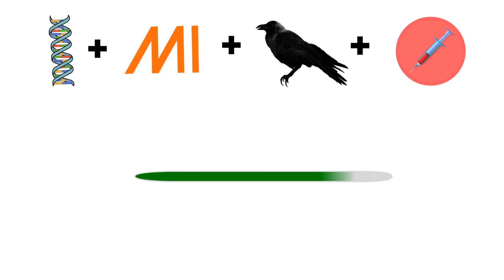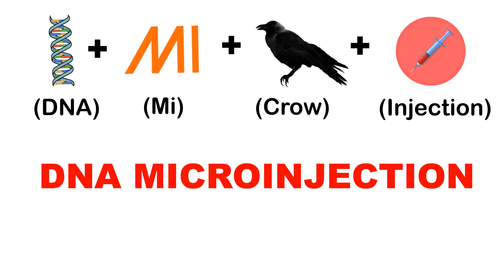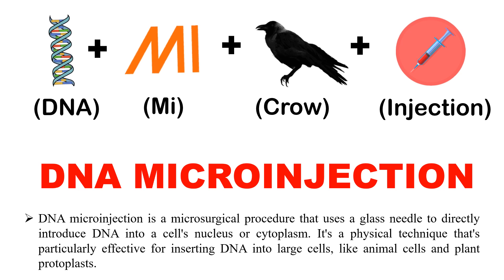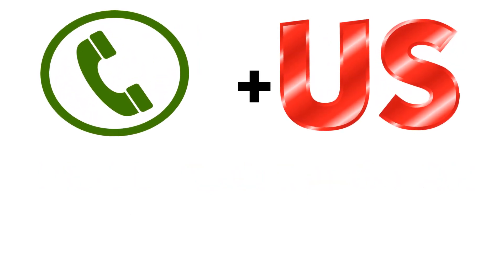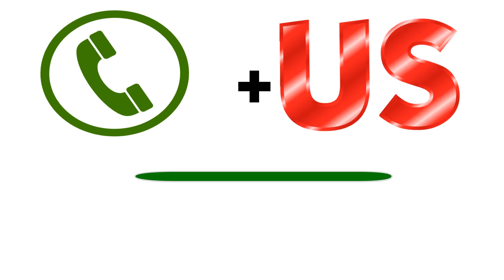The next term has four emojis and you have to get the scientific term all four emojis make together. The answer is DNA microinjection. The emojis represent DNA, then 'mi', then a crow (micro), and injection — so DNA microinjection. DNA microinjection is a technique used to transfer DNA into cells, where the DNA is micro-injected directly into the cell.